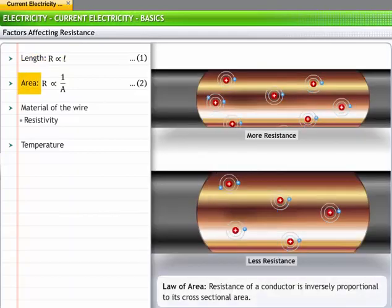Secondly, the resistance of a conductor is inversely proportional to its cross-sectional area. Larger the area of the conductor, lesser the resistance offered. This relationship between resistance and the area of a conductor is termed as the law of area.